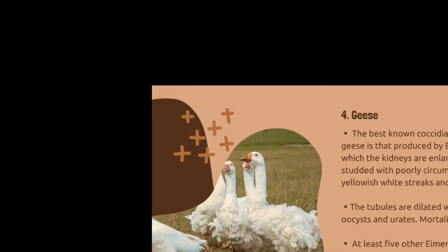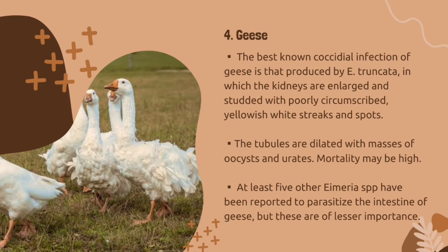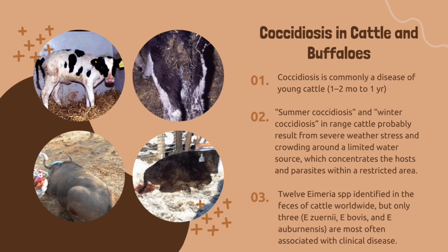The last poultry example is geese. The best-known coccidial infection of geese is that produced by Eimeria truncata, in which the kidneys are enlarged and studded with poorly circumscribed yellowish-white streaks and spots. The tubules are dilated with masses of oocysts and urates. Mortality may be high. At least five other Eimeria species have been reported to parasitize the intestine of geese, but these are of lesser importance.